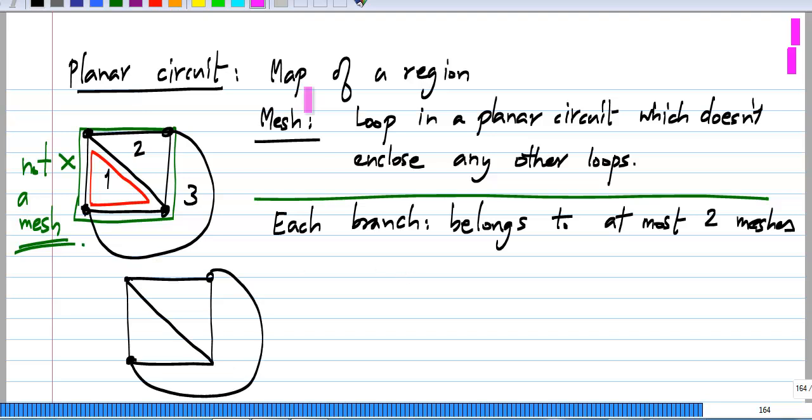Again, redrawing the circuit, let us identify the meshes first. When you have meshes, there is no ambiguity at all. There is only one way to identify the meshes. That is the advantage of this. That is the simplicity of it. That is why I am going to deal with that.